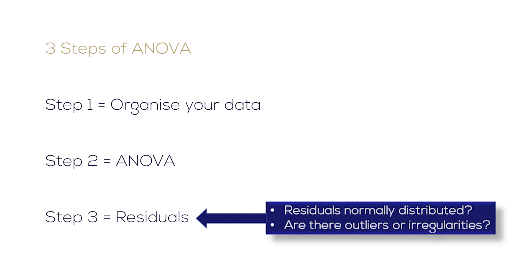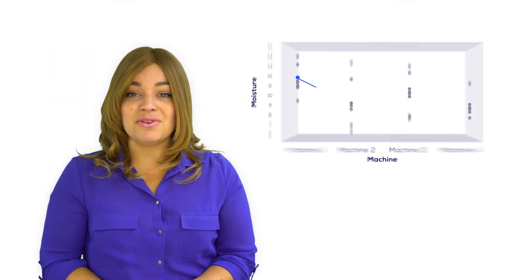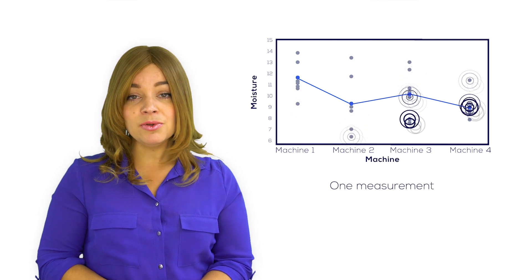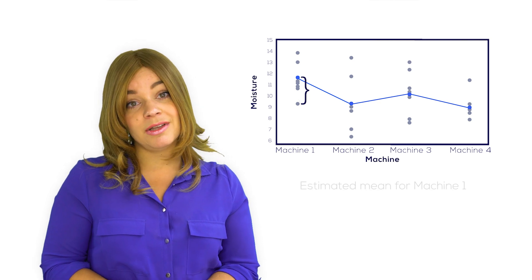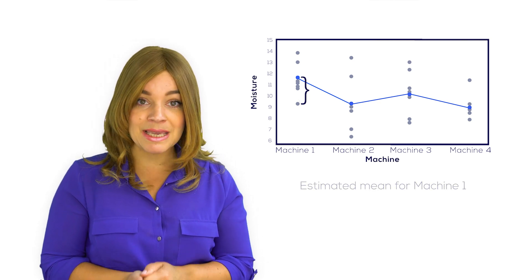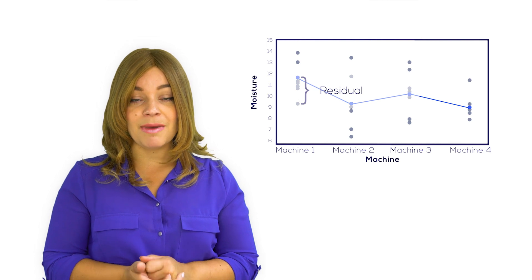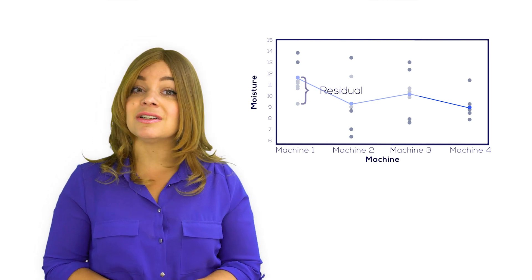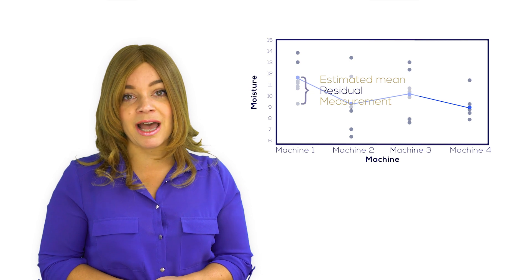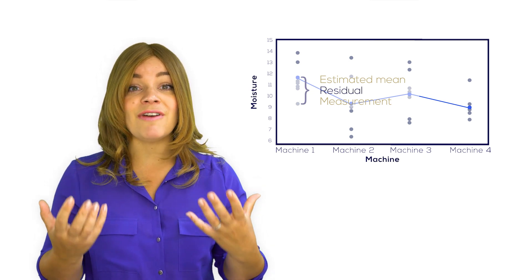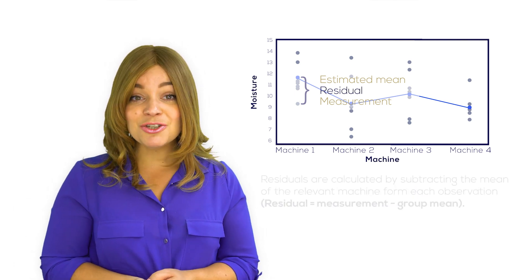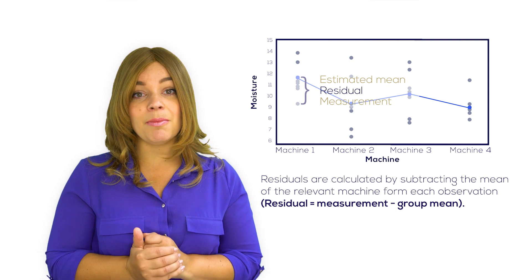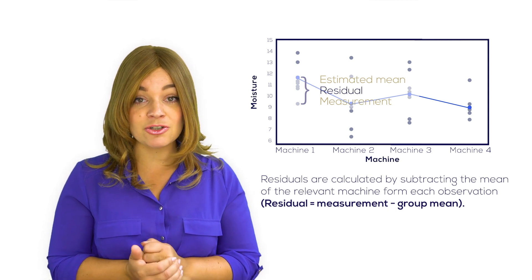But what is a residual? Every dot in the graph is one measurement. We also know the value that we would expect from a measurement for machine one — that is the estimated mean. So there is a difference between the measurement and our expectation. This difference is not explained by our influence factor machine. It is left over variation, and this difference is called the residual. The residuals are calculated by subtracting the expected value from each observation.